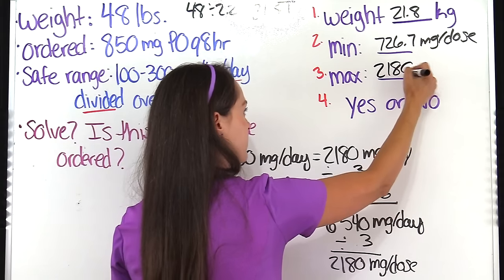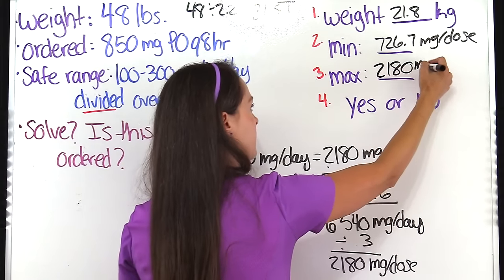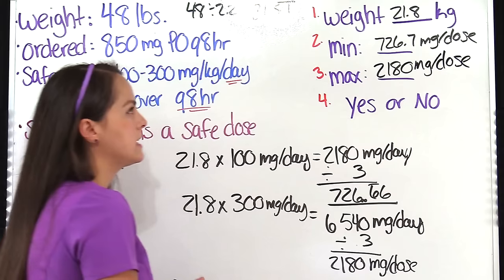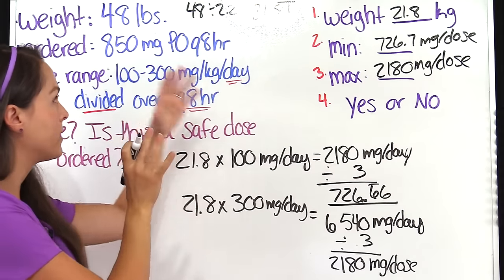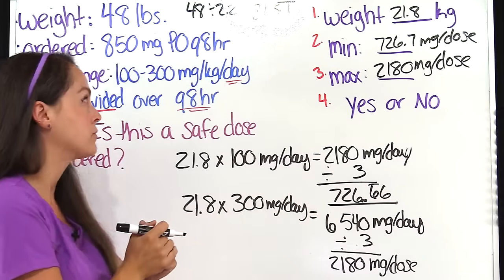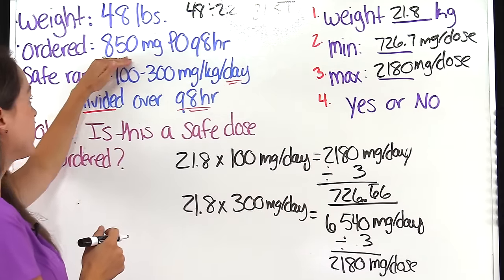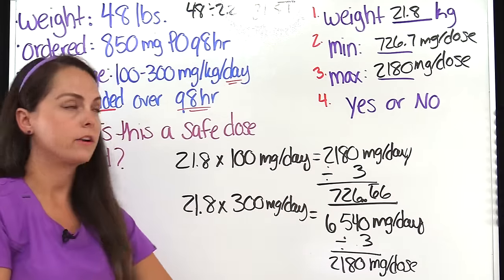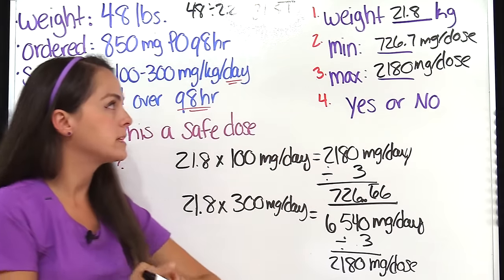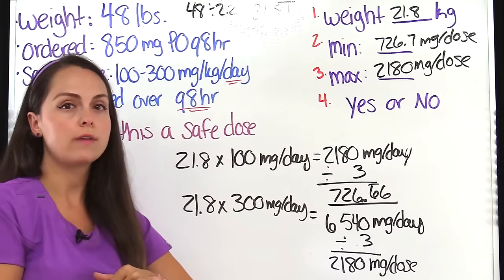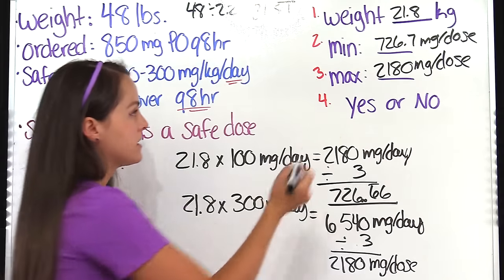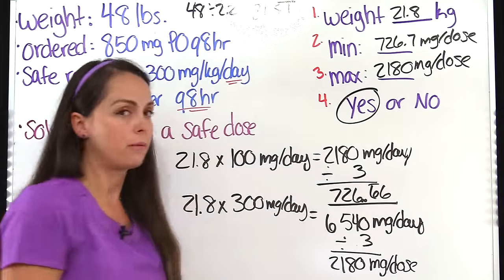Now we need to see if the amount the physician ordered falls within that safe dose range. The physician ordered 850 milligrams by mouth every eight hours. Our safe dose range is 726.7 to 2,180 milligrams per dose, and 850 does fall between those values. So yes, this is a safe dose for our patient.